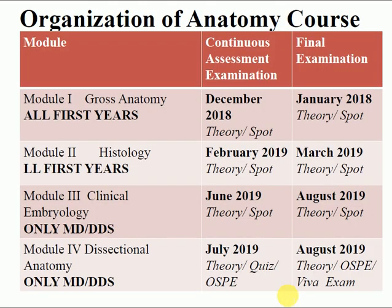First, anatomy is divided into four modules. Module 1 is gross anatomy, module 2 is histology, module 3 is clinical embryology, and module 4 is dissectional anatomy. Gross anatomy is sometimes called macroscopic anatomy — we are studying the structure and arrangement of the whole body, from the head and neck to the lower limb.